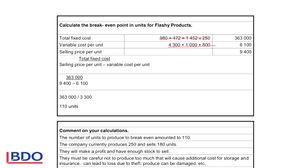The total fixed cost is then divided by the selling price per unit minus the variable cost per unit. So the total fixed cost is 363,000. The selling price per unit was given to us as 9,400, and we subtract from the selling price the variable cost of 6,100.